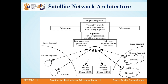Coming towards satellite network architecture, in this figure we can see the satellite along with ground segments. The satellite includes a propulsion system, telemetry, attitude control, commanding, fuel, battery and power. It also includes solar arrays. It can have onboard processing, switching, or routing. Then there is a down converter, preamplifier and filter, along with high power amplifier and filter. These are the main components present on the satellite.